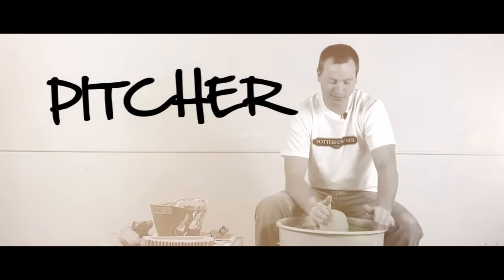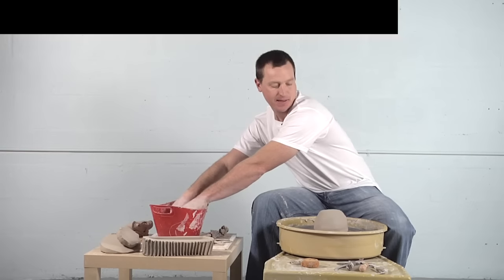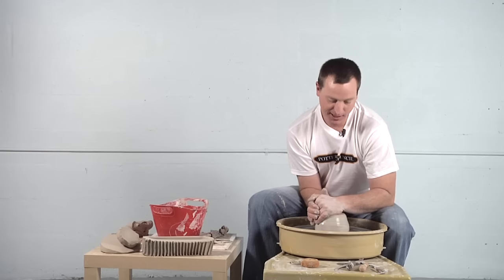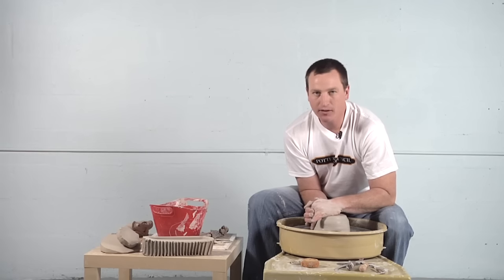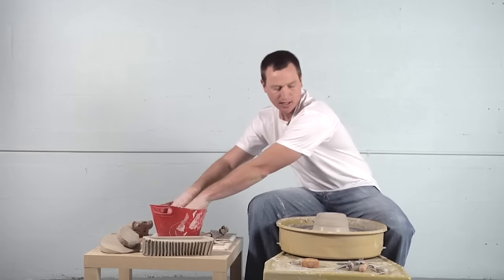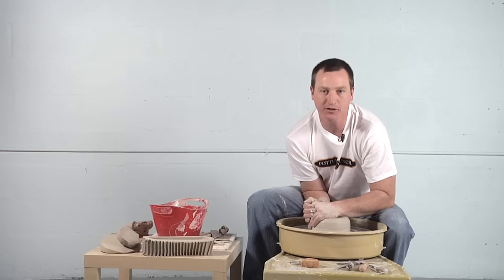This next form is a pitcher form and it will utilize several of the techniques you have seen previously, with the addition of using a slab form for the spout and cutting a gusset into the side of the piece to make it more asymmetrical.